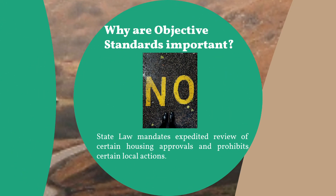The Housing Accountability Act has provisions that make objective standards important. In general, this act's purpose is to significantly increase the approval and construction of new housing for all economic segments of California's communities by curbing the capability of the local government to deny, reduce the density of, or render housing projects infeasible.